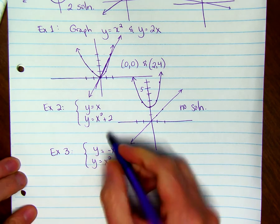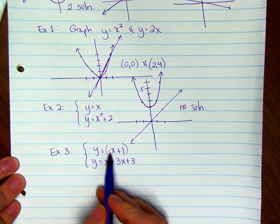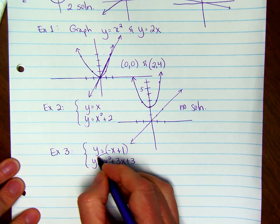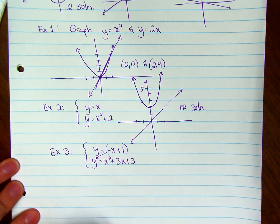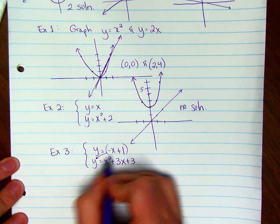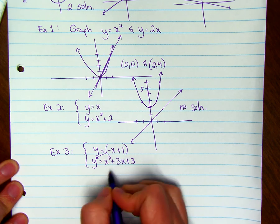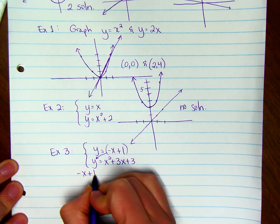I can take the first equation, y = -x + 1, and I can plug that in for y in my second equation. So since y equals both of those, they both have to be equal to each other.